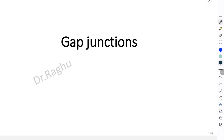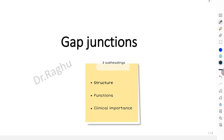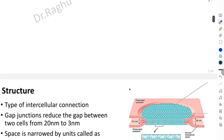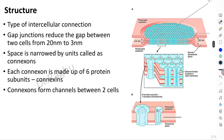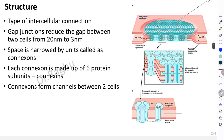What we should write in the examination if gap junctions is asked, so as to get maximum marks — that is what we are going to understand in this video. First of all, divide your answer into three parts: the first part describing the gap junction structure, the second part the functions of gap junctions, and it's always good to add the clinical importance or applied aspects. So let's begin with the structure.